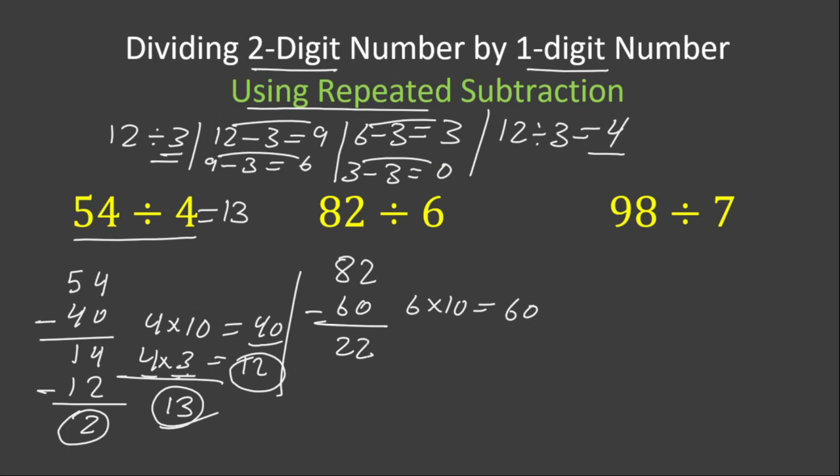We again look for a number that should be multiplied by 6 and give us either 22 or a number close to 22. 3 times 6 is 18, 4 times 6 is 24. If we multiply 4 or if we subtract 6 from 22 four times, we cannot subtract it because 24 is more than 22. So we subtract 3 times.